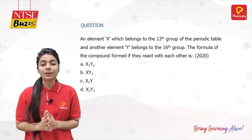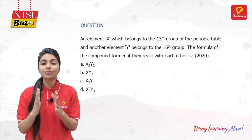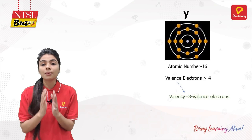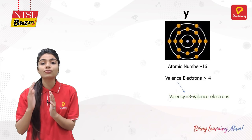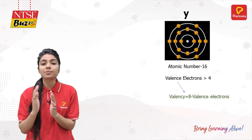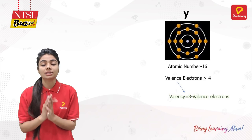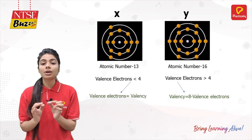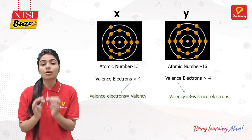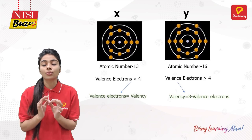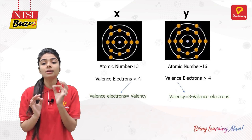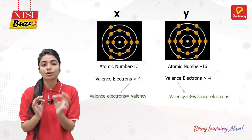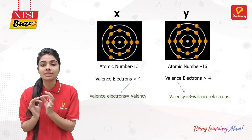Let's apply a simple trick. The trick says: if the number of valence electrons are more than 4, then subtract from 8. If the number of valence electrons are less than 4, then write the number of valence electrons as their valence.